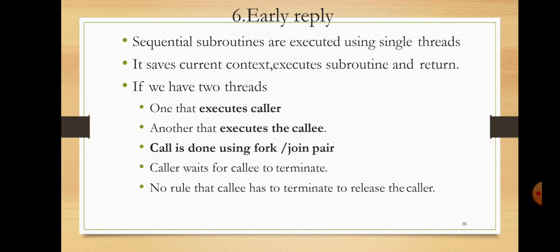The next method is the early reply method. Sequential subroutines are executed using single threads. For concurrent execution we need multiple threads. When a subroutine is currently executing, the context is saved, the subroutine executes, and upon completion control returns to the previous context. Consider we may have two threads — one thread for the caller and one for the callee.